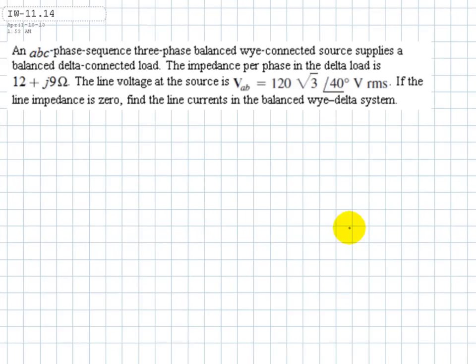This is Erwin's 11.14 exercise. An ABC phase sequence three-phase balanced wye-connected source supplies a balanced delta-connected load.